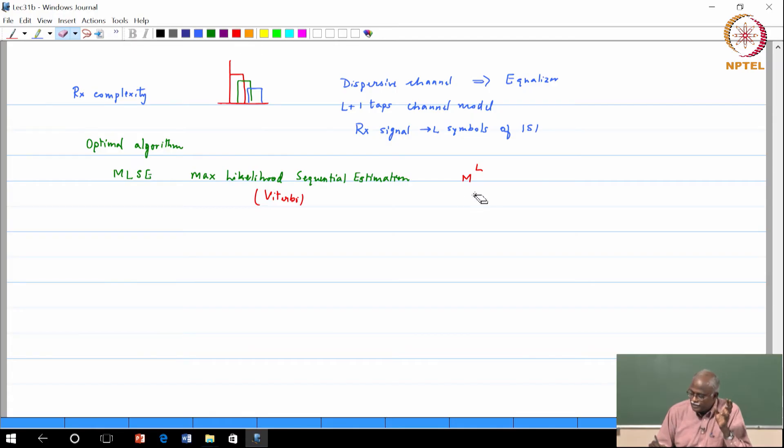So M is your constellation size. This is constellation size - if it is BPSK is 2, QPSK is 4, 16 QAM constellation size. And L is your number of symbols of ISI.